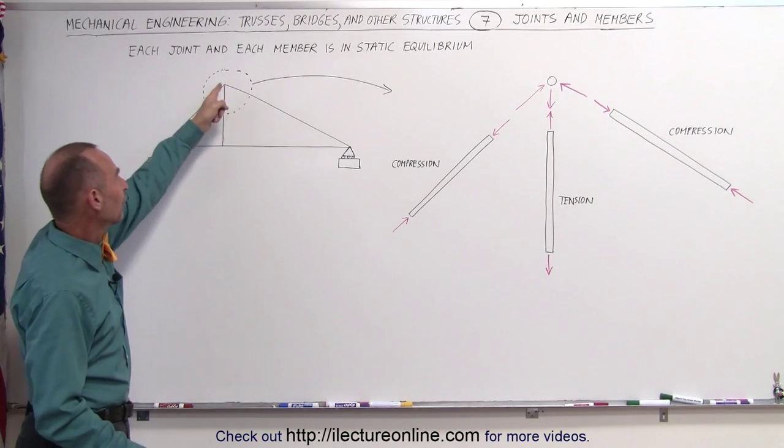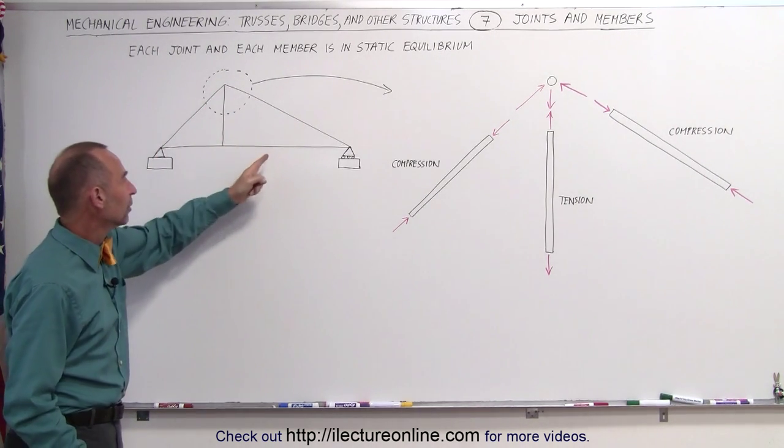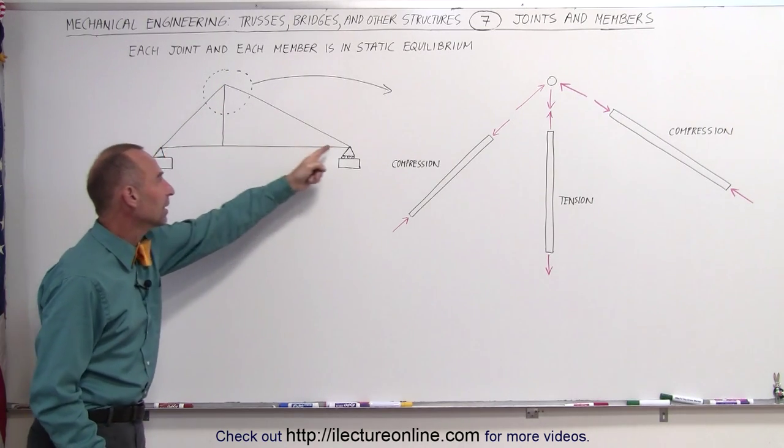We have two beams this way, one beam going this way, and two more beams going this way with two joints here and one joint on each side.